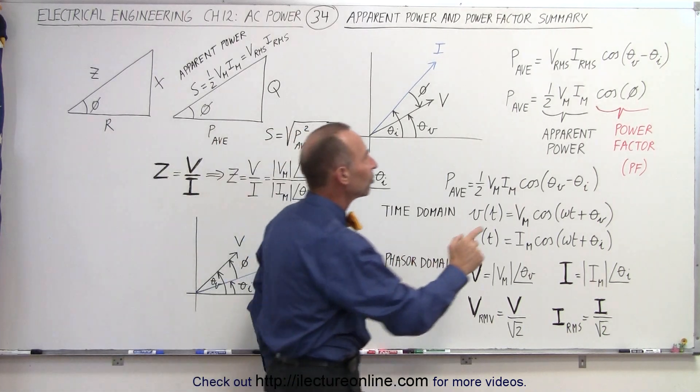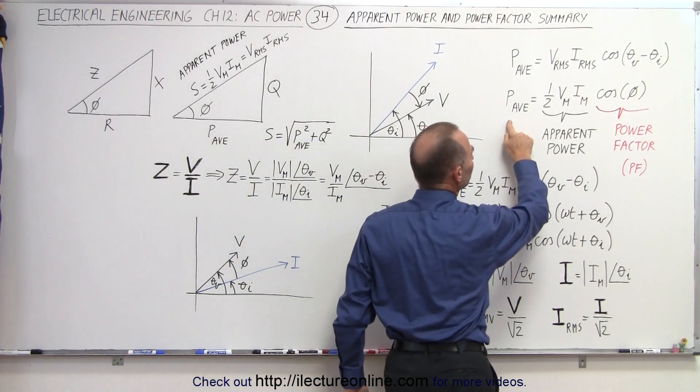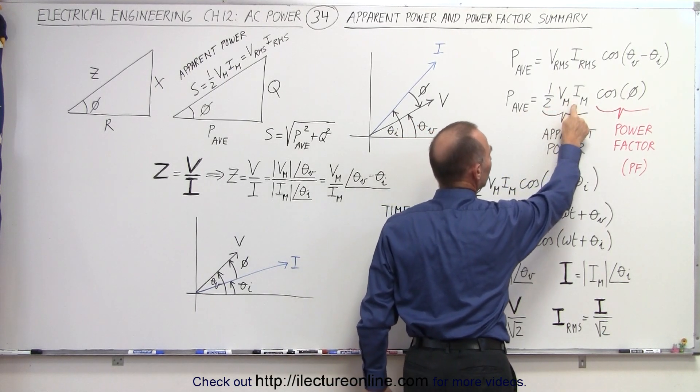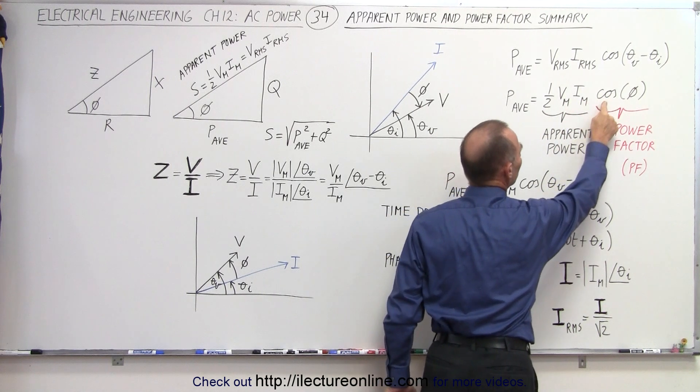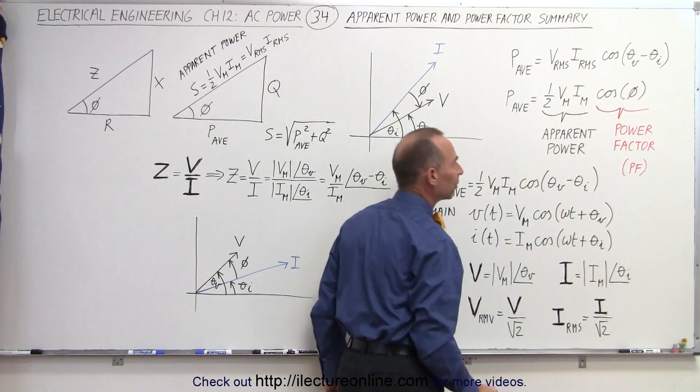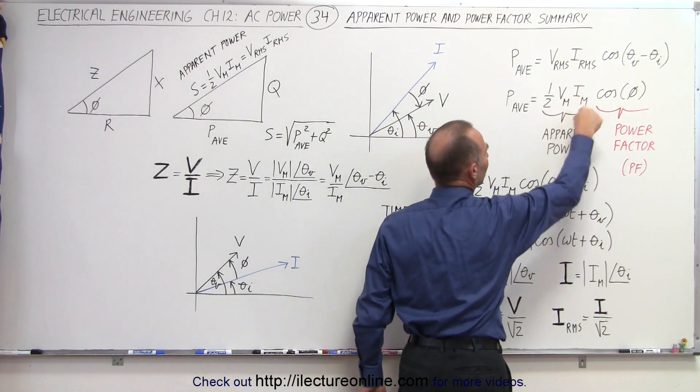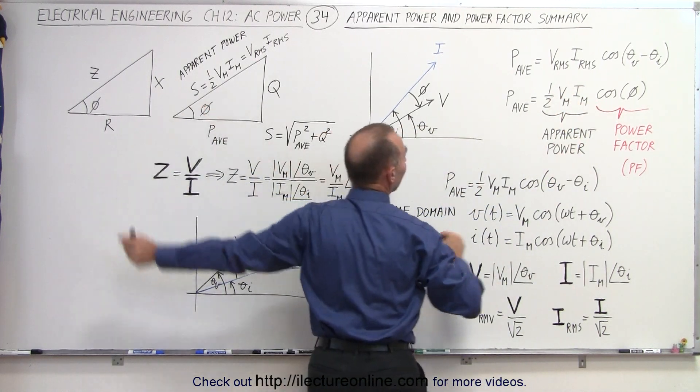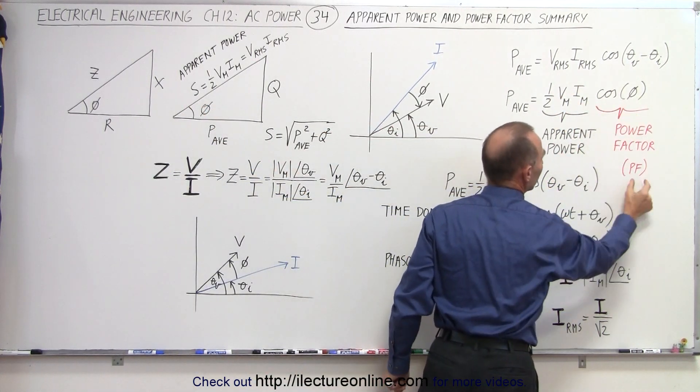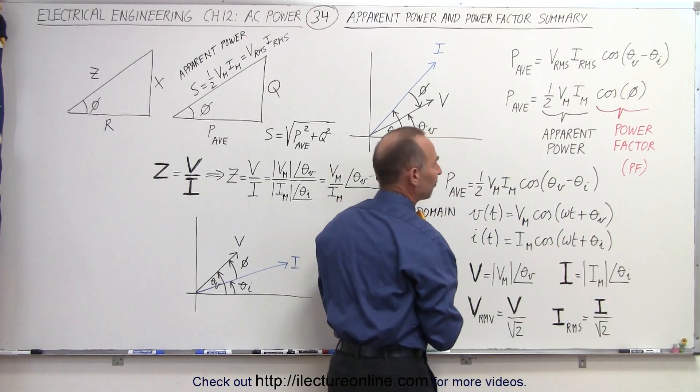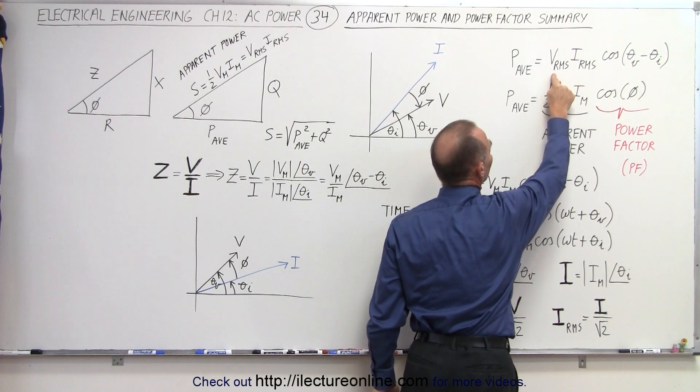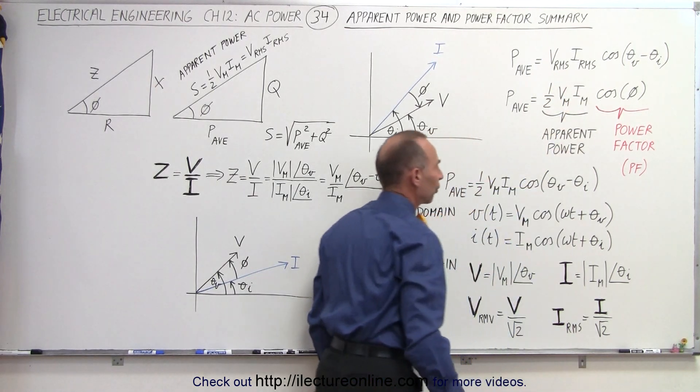We have an equation describing the power consumed by the resistive portion of the load as being one-half the voltage maximum times the current maximum in the circuit times the cosine of the angle between them, the phase angle between them, where this portion was the apparent power, represented by the variable S, and this was the power factor, which typically is written as PF. Notice that the apparent power can also be written as the product between the root-mean-square voltage and the root-mean-square current.